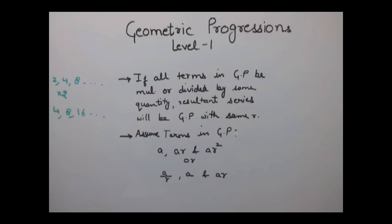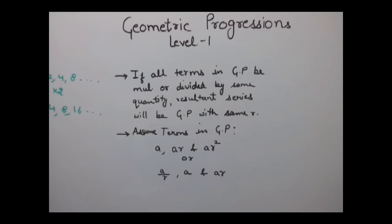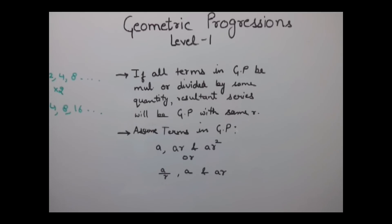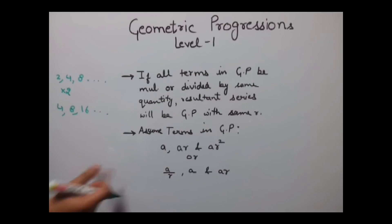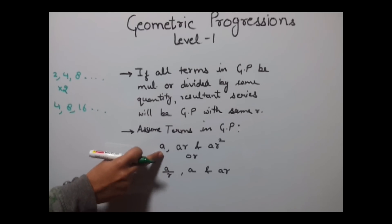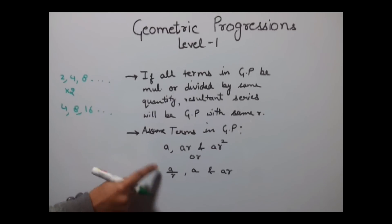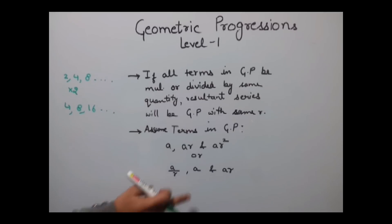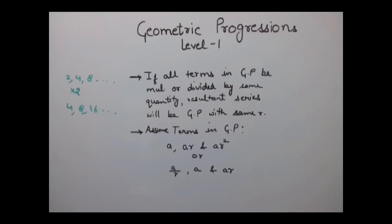Secondly, if you need to assume terms in a GP — say 3, 5, 6, or 7 terms — you can use standard assumptions. For 3 terms you can assume them as A, AR, AR² or alternatively as A/R, A, and AR. This assumption simplifies the question.